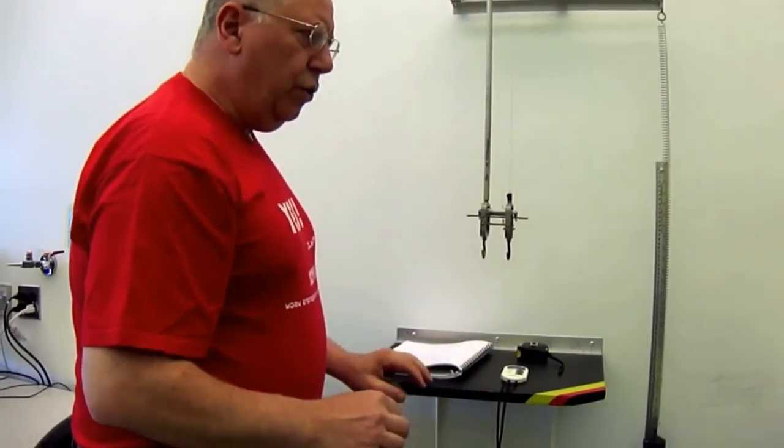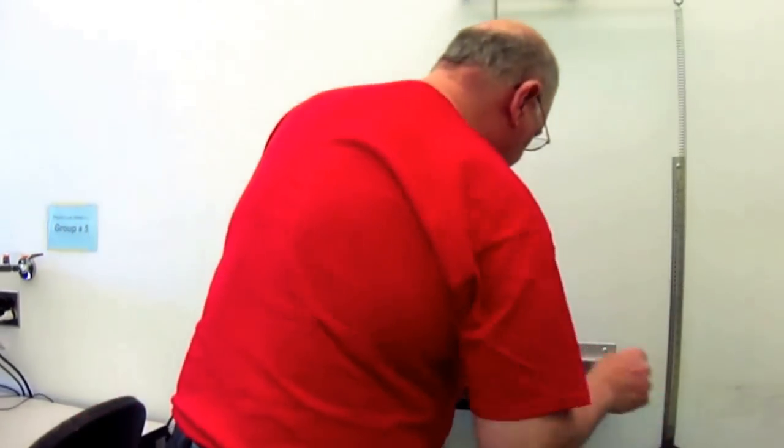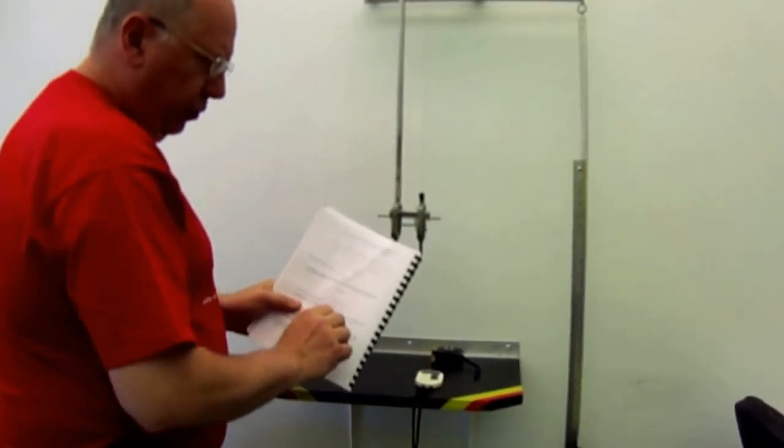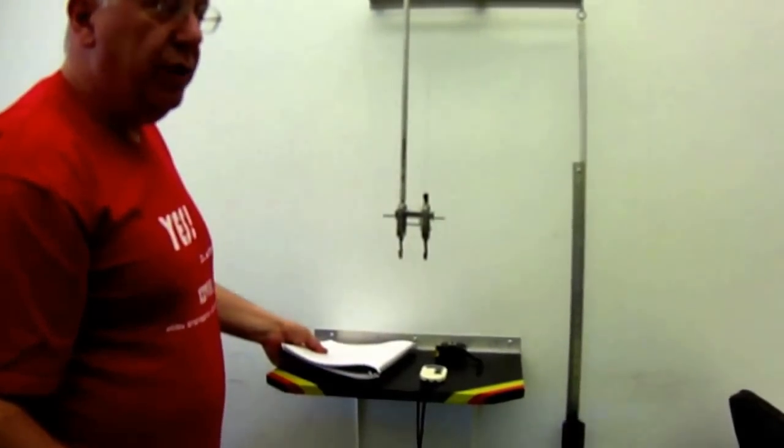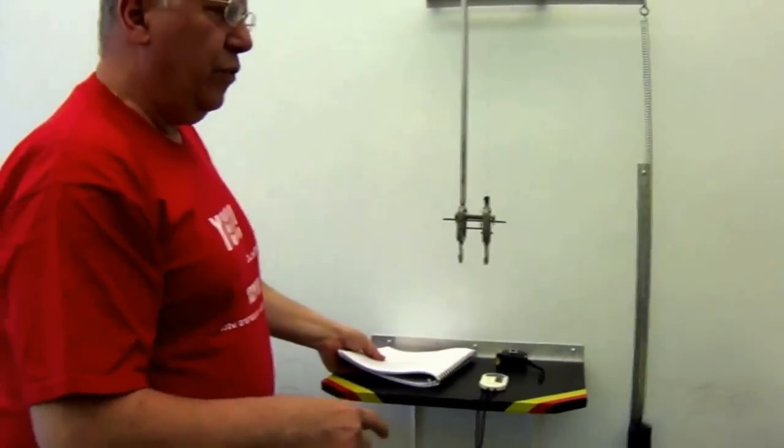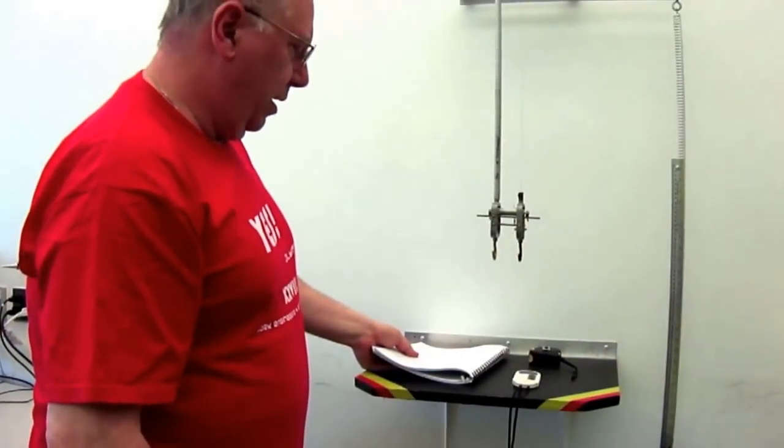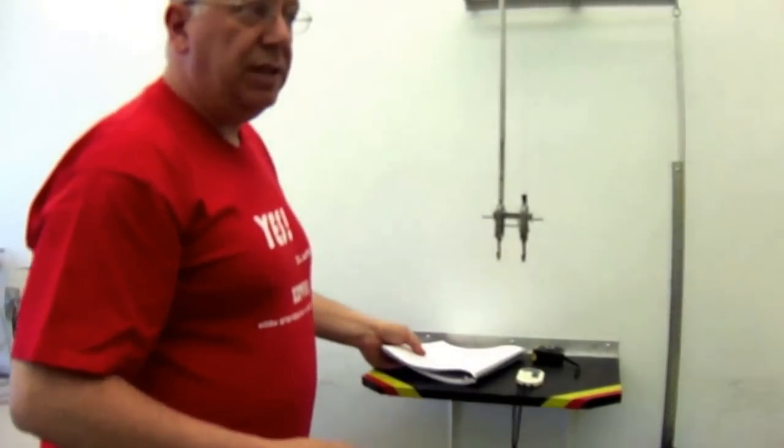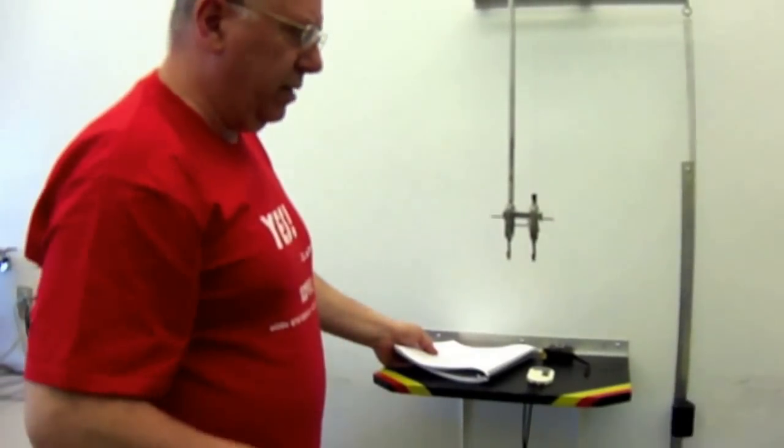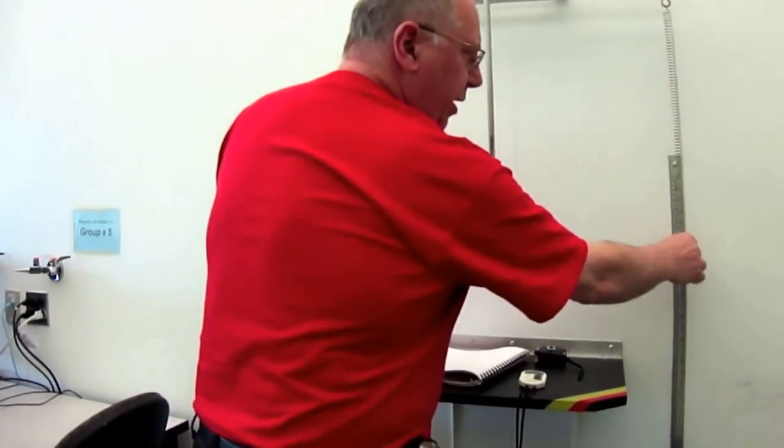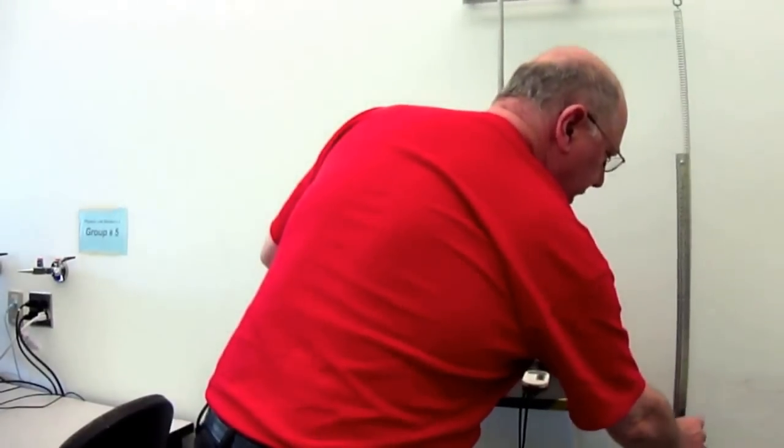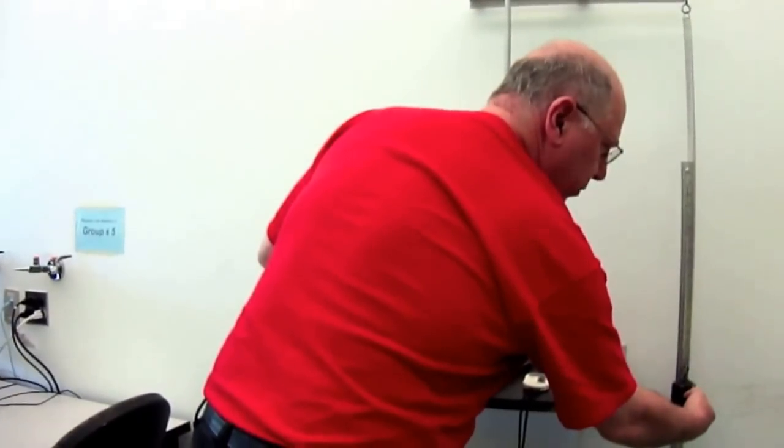Now you will notice that the spring constant using this dynamic technique, applying this formula here, will not actually equal the spring constant for the static Hooke's law method that we used. The reason for that, you will learn in this lab, is because we make some assumptions that are reasonable, but are not correct. We assume that the spring has zero mass. So the only mass in the experiment is the 1,000 kilograms that's suspended at the end of the spring.